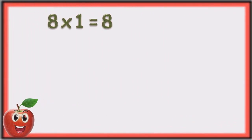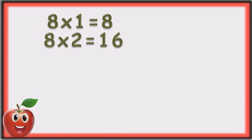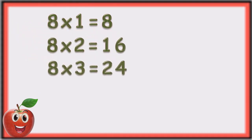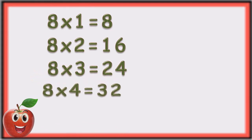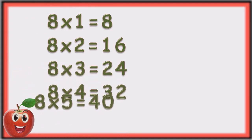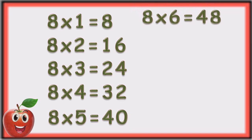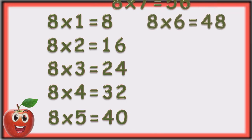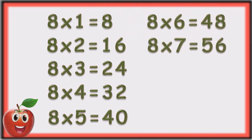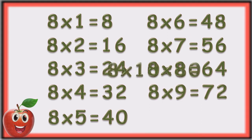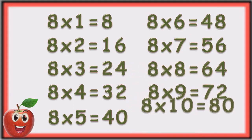Eight ones are eight. Eight twos are sixteen. Eight threes are twenty-four. Eight fours are thirty-two. Eight fives are forty. Eight sixes are forty-eight. Eight sevens are fifty-six. Eight eights are sixty-four. Eight nines are seventy-two. Eight tens are eighty.